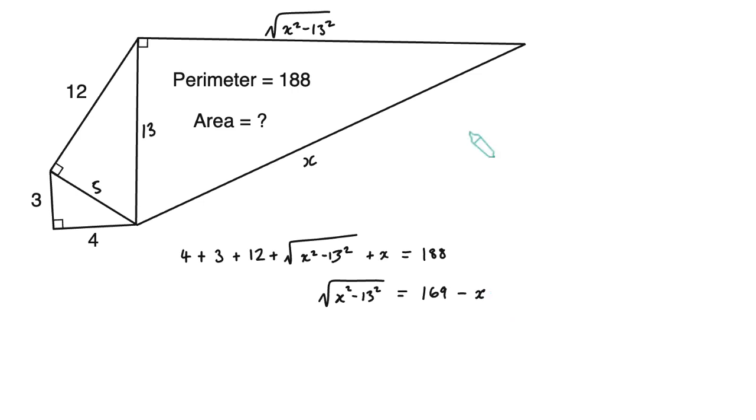And next we'd want to square both sides of the equation. We've got to be careful when we square the right-hand side to do the double bracket expansion A minus B squared equals A squared plus B squared minus 2AB. Here we'll have A as 169 or 13 squared and B is X. You'll see why I want to leave it as 13 squared in a second.